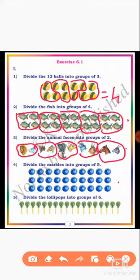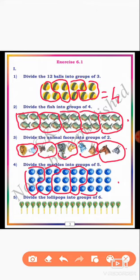Dear students, next go to the 4th question: divide the marbles into groups of 5. You start to make the group of 5: 1st group, 2nd group, 3rd group, 4th group, 5th group, 6th group. There are 6 groups. The 30 marbles are divided into 6 groups, each group having 5 marbles.